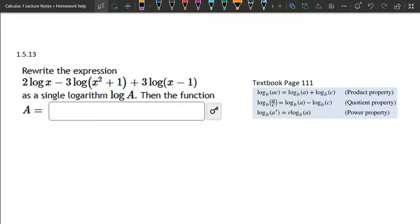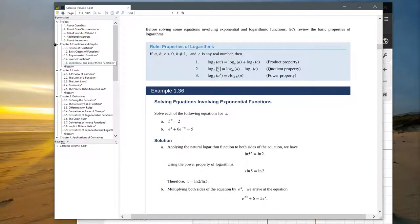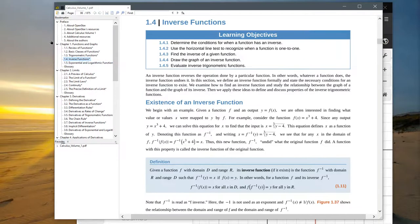And I went and grabbed everything we need from the textbook. So how in the world did I find that? Well, I know we're in the 1.5 section. That's where the problem came from. So if you click on 1.5,